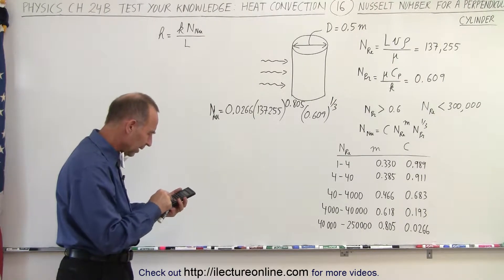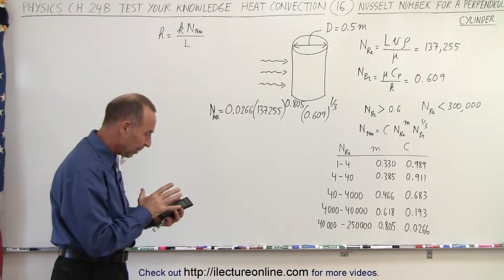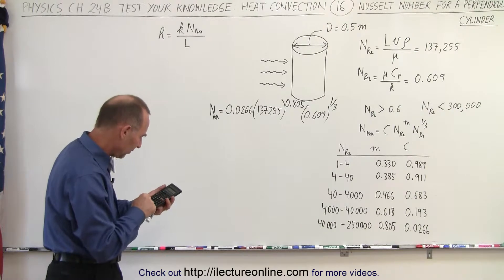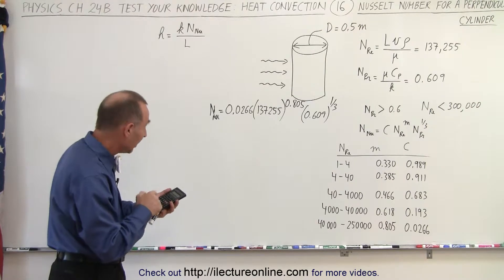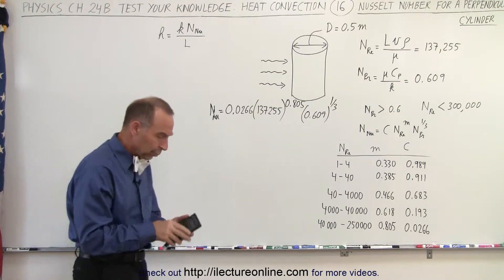So 0.609 raised to the one-third power, and so that's about 0.85. Notice it's close to 1. And then we multiply that times 137,255 raised to the 0.805 power, and then multiply times 0.0266 equals about 308.